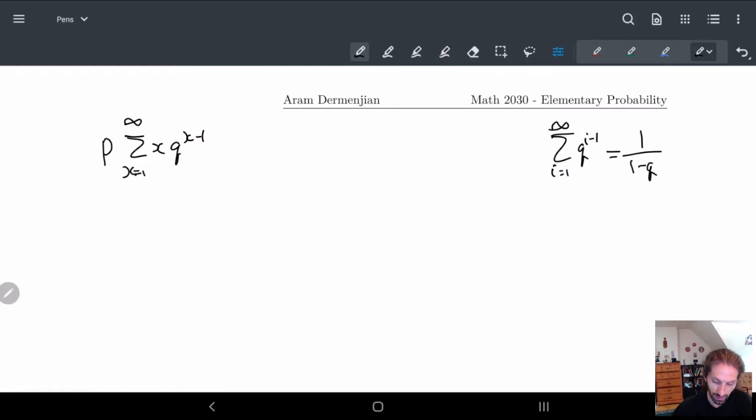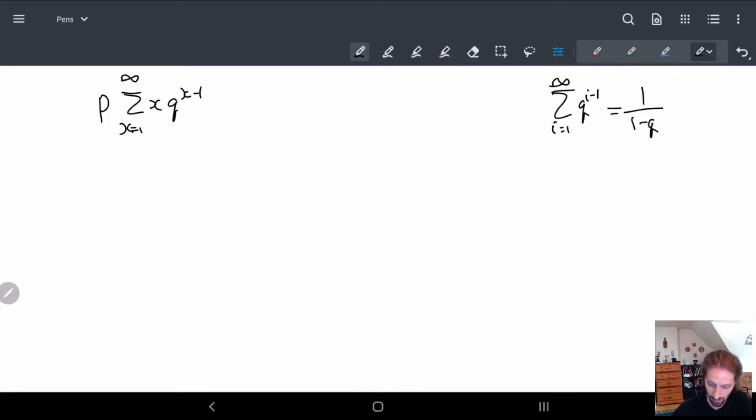But here we have an X times all this, so let's kind of see what this changes. If I multiply this by i, what do we get? So i Q to the i minus 1, i equals 1 to infinity, here we get 1 times Q to the 0 plus 2 times Q to the 1 plus 3 times Q to the 2 plus 4 times Q to the 3, etc.